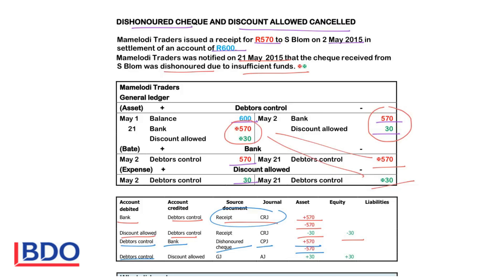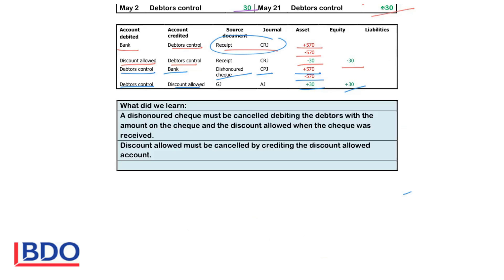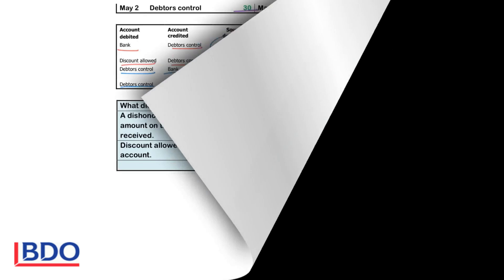Debtors control will be debited so that the assets increase with the 30 rand that they owe. Discount allowed expense is now decreased because we don't allow the discount anymore, so that means it will increase my profits. A dishonoured cheque must be cancelled by debiting the debtors with the amount on the cheque and the discount allowed when you receive the cheque from them. So you will increase their account with the full amount that they owed before you received the cheque. Discount allowed must be cancelled on the credit side of the discount allowed account to decrease the expense.